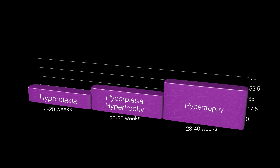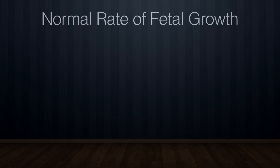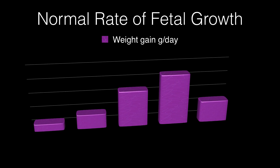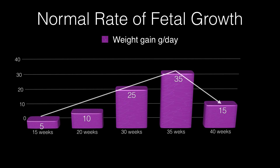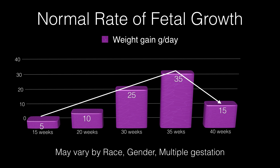If insult occurs to the fetus in the early part of fetal life — that is the first 16 weeks — it will affect the growth of all organs of the body, resulting in symmetrical intrauterine growth restriction. If the insult occurs in the later part of pregnancy during the hypertrophy phase, there is redistribution of blood to vital organs like the heart and brain, whereas blood to other organs like the liver and splanchnic circulation is decreased, leading to asymmetrical intrauterine growth restriction. Fetal weight gain peaks at about 35 grams per day by the 35th week, then declines to 15 grams per day by 40 weeks.